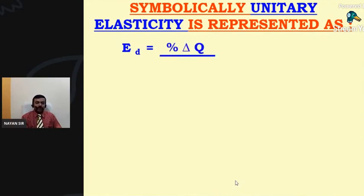So what hypothetical example we have taken? That there is a change in price, decrease in price by 50%, so increase in quantity by 50%. So let us substitute that: 50 upon 50, so it is going to come 1, friends.